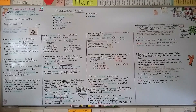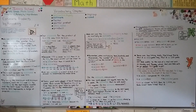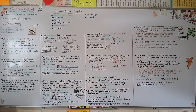Remember, we can estimate by finding two numbers that the exact answer should be between. In our next lesson, 2.5, we're going to use the distributive property to help us multiply two-digit numbers by one-digit numbers. I hope I'll see you there — have a wonderful day, and please hit the like button!